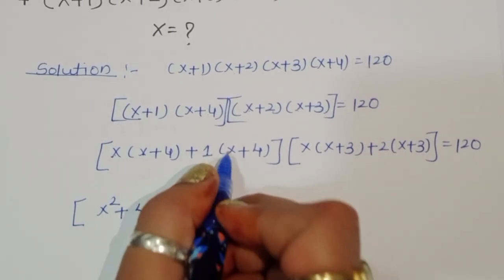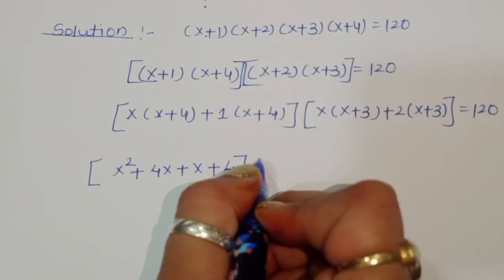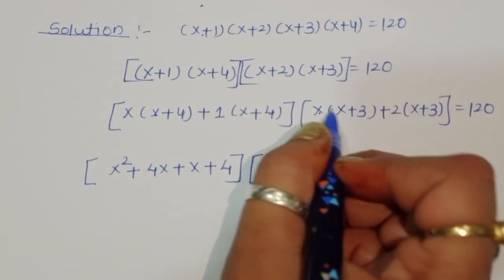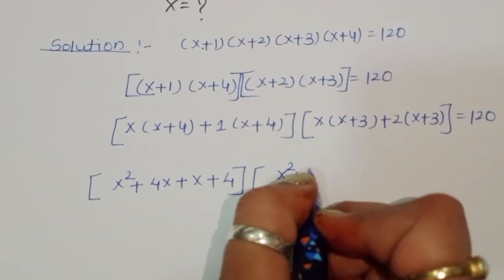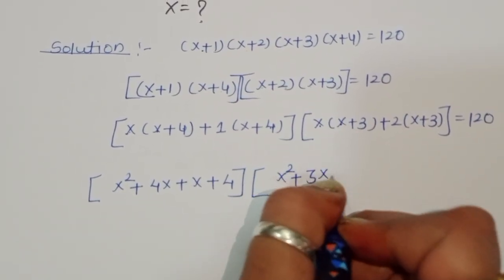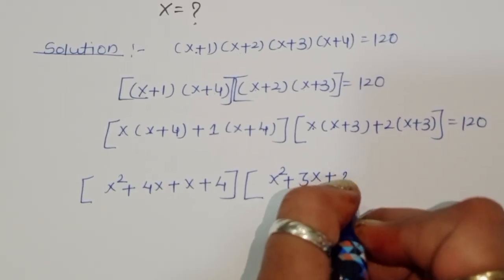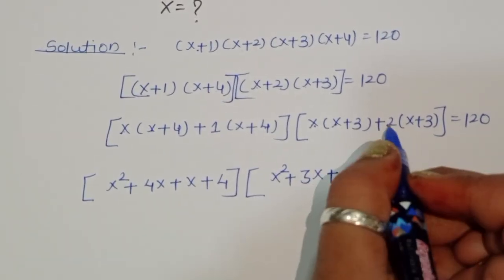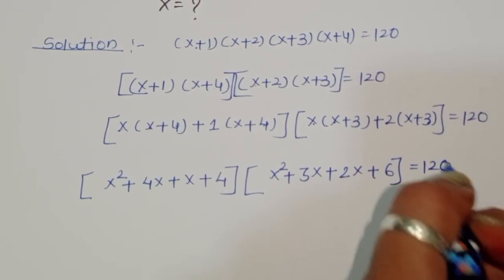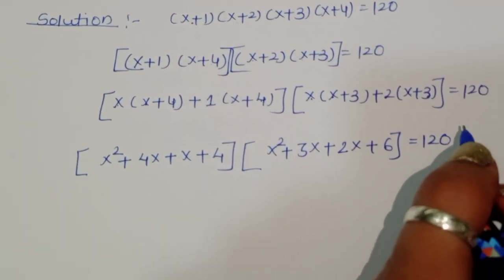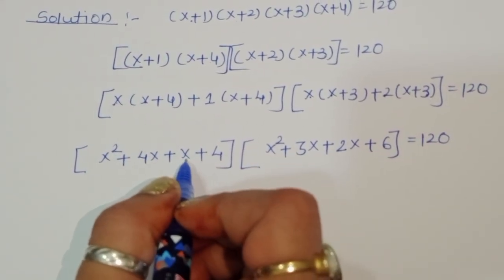Expanding: x² + 4x + x + 4 for the first bracket, and x² + 3x + 2x + 6 for the second bracket, all equal to 120.